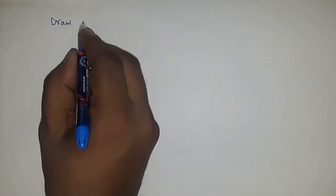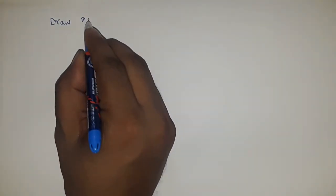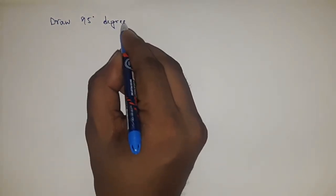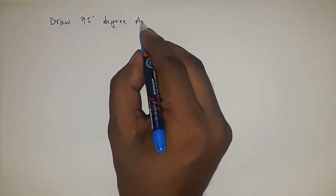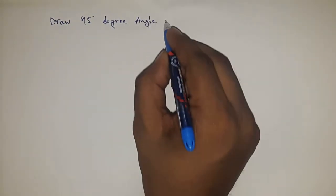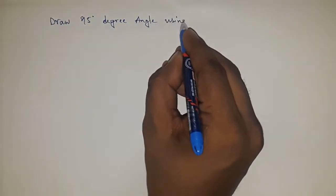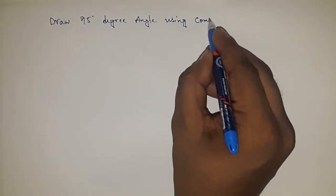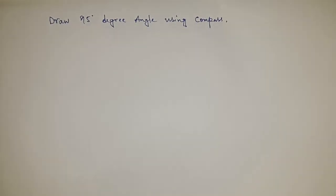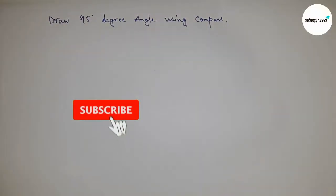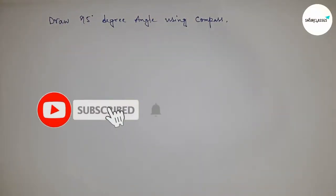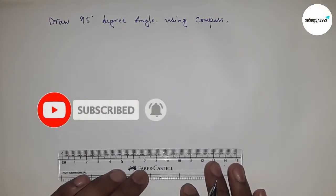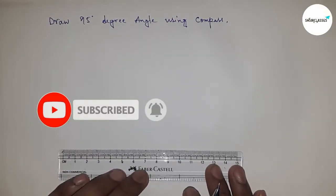Hi everyone, welcome to SSR Classes. Today we are talking about the construction of a 95 degree angle using a compass. Before starting the video, I have one request: please subscribe to the channel and press the bell icon.